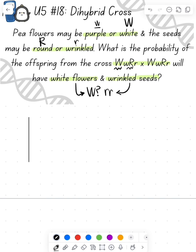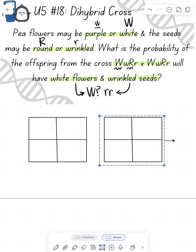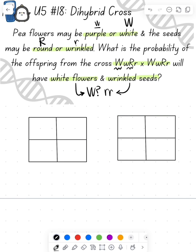So we're going to do two Punnett squares. Our first Punnett square will be a monohybrid cross with our W's, and the second Punnett square will be a monohybrid cross with our R's.